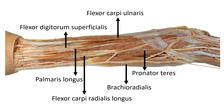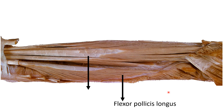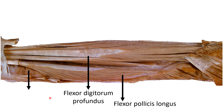Now let us discuss about the deep muscles of the flexor compartment of the forearm. The first and foremost muscle, present most laterally, is called flexor pollicis longus. Medial to that we can identify flexor digitorum profundus. At the lower aspect of the forearm, under the flexor pollicis longus and flexor digitorum profundus, we can identify transverse fibers — those are called pronator quadratus.